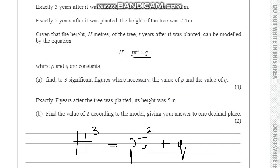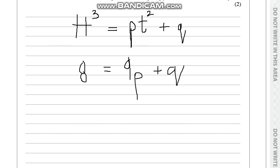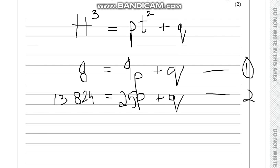The second one says that exactly 5 years after it was planted, the height of the tree was 2.4 meters. So the height is 2.4 cubed, which is 13.824 equals, and 5 squared is 25, so this will be 25p plus q. That's our first equation and that is our second equation.